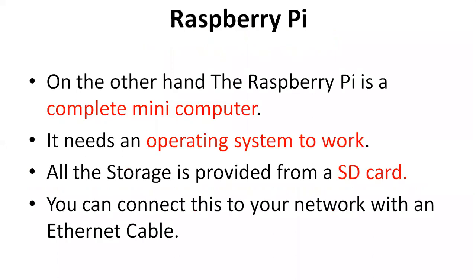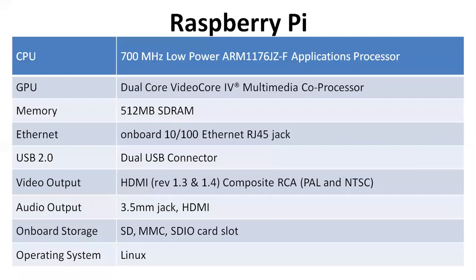First, we want to know about the Raspberry Pi. It is a mini computer that requires an operating system to work, and it uses an SD card to store the operating system. Here are some of the specifications of the Raspberry Pi that we will compare with the other devices.